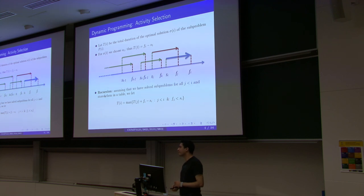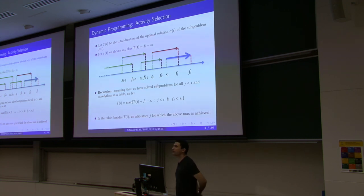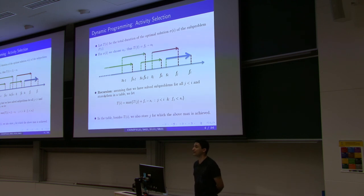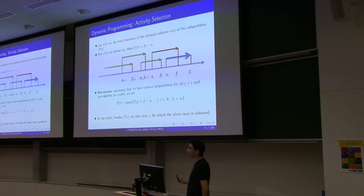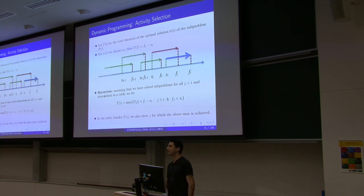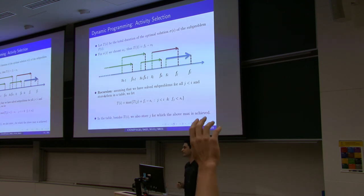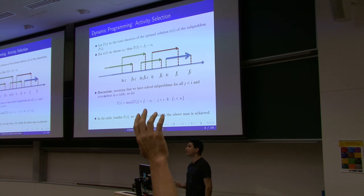In the table, besides storing Ti, we also store the j for which the maximum was achieved. For each Ti, we identify the j that helped us achieve the maximum time and store that j as well. By doing that, we know the suitable previous optimal task which gave us the extension, and by following this information we can read off the full solution — not just find the maximum duration.